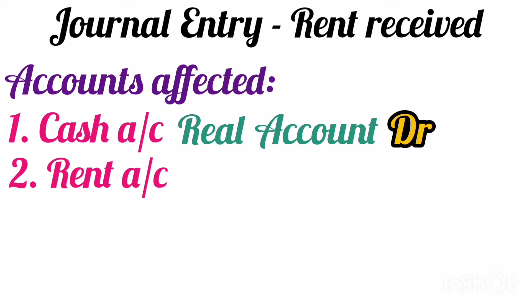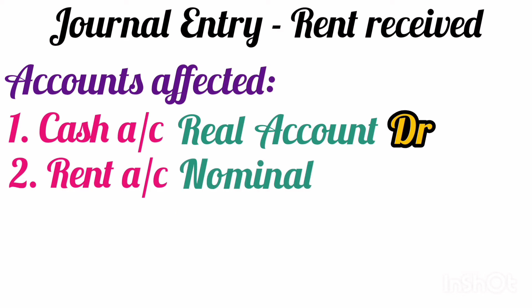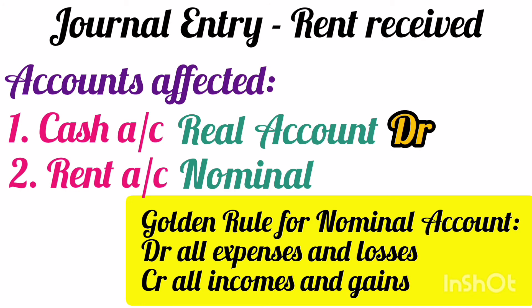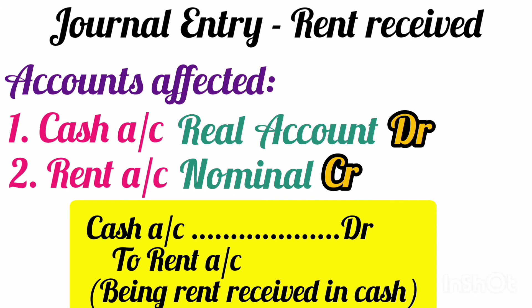The other account affected will be rent account. Rent account is a nominal account, as rent received is an income. The golden rule for nominal accounts is debit all expenses and losses, credit all incomes and gains. When we receive rent, rent is our income. As per the golden rule, rent account will be credited. The final journal entry becomes cash account debit to rent account. The narration will be: being rent received in cash.